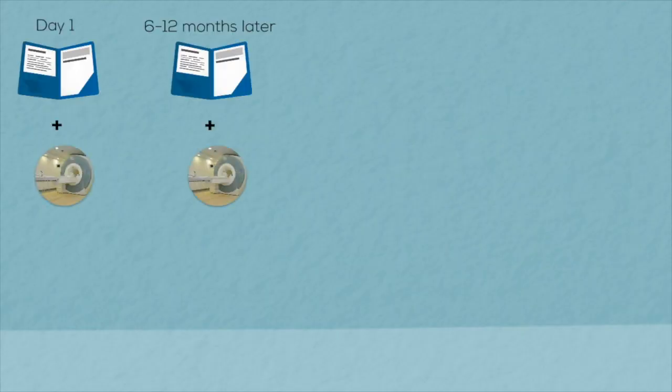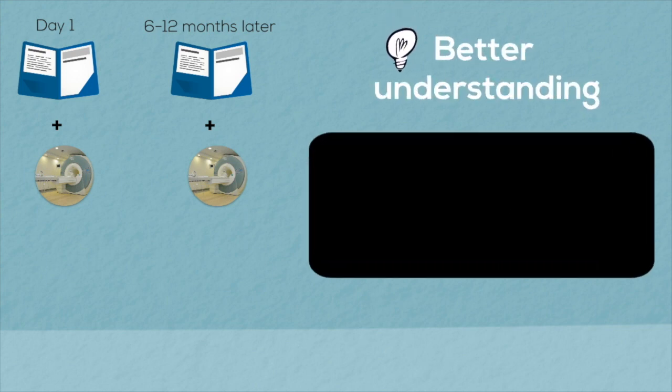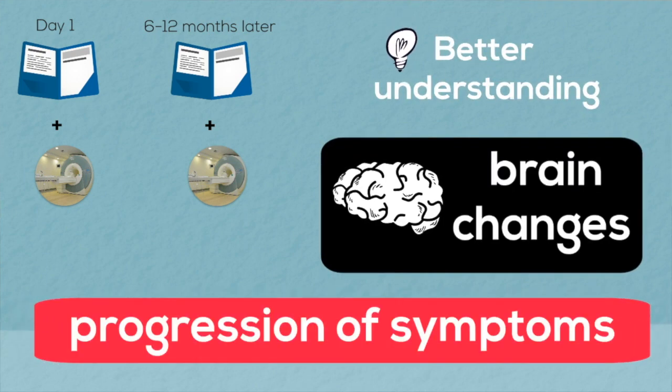There has been a lot of research in including more types of MR images and other biomarkers to resolve this problem. But it turns out, based on our work, that you can make highly accurate predictions if you can include data from another visit of the same individual. By adding another time point, we basically get a sense of the rate of change in clinical performance as well as brain atrophy over a few months, and this information is very useful to make long-term predictions.